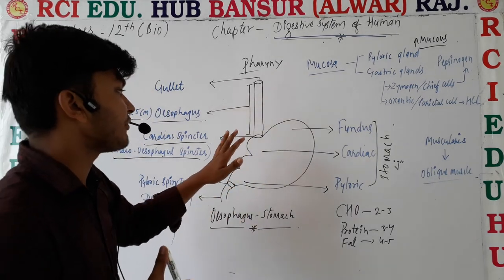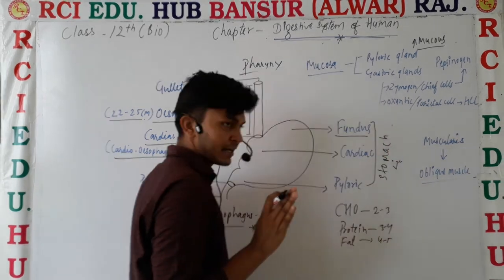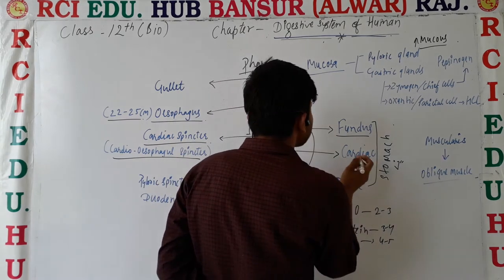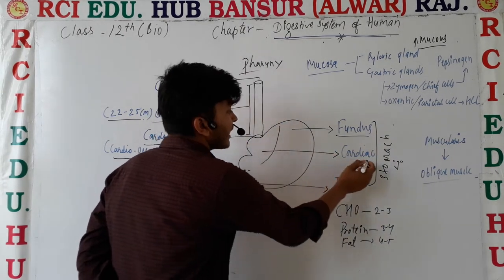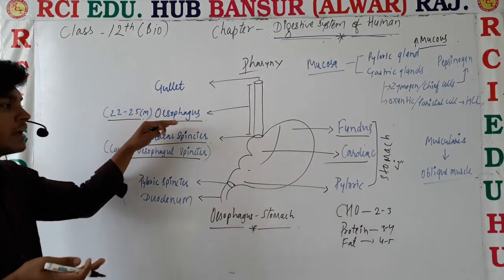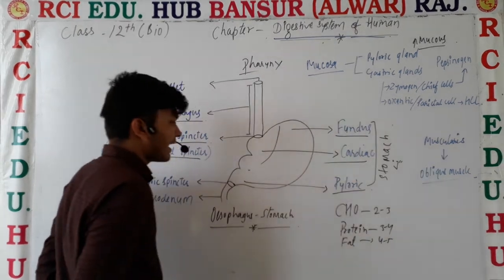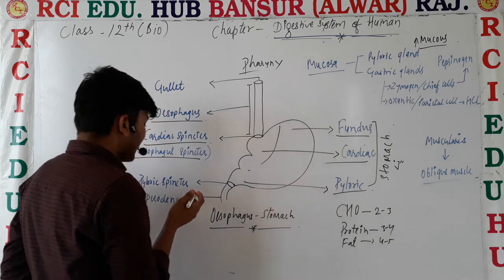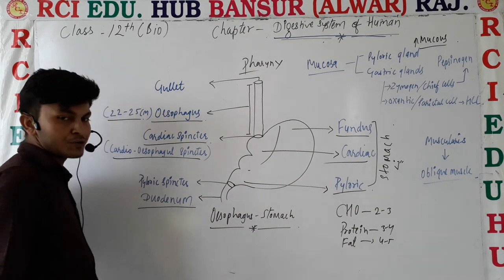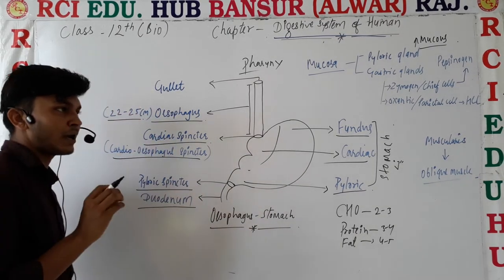Stomach is divided into 3 parts. The topmost part is the fundus, which is the biggest part of the stomach. The side portion is known as the cardiac region, where the esophagus opens. And the lower part is known as the pylorus, which opens into the small intestine.